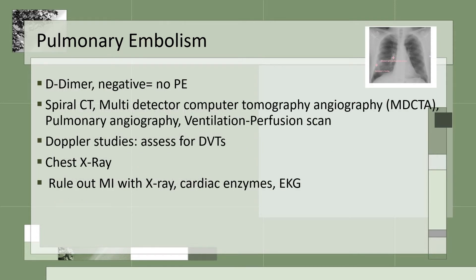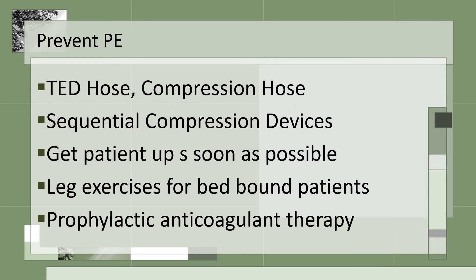Tests for pulmonary embolism include a spiral CT, multi-detector CT angiography, pulmonary angiography, or ventilation-perfusion scan. The D-dimer is standard — if it is negative, there is no PE. Doppler studies assess for DVTs and confirm their presence. Chest x-rays also help determine if there is a PE, and we want to rule out MI with cardiac enzymes and EKG. Prevention of PE includes TED hose, compression hose, sequential compression devices, getting patients up as soon as possible after surgery, leg exercises for bed-bound patients, and prophylactic anticoagulant therapy.